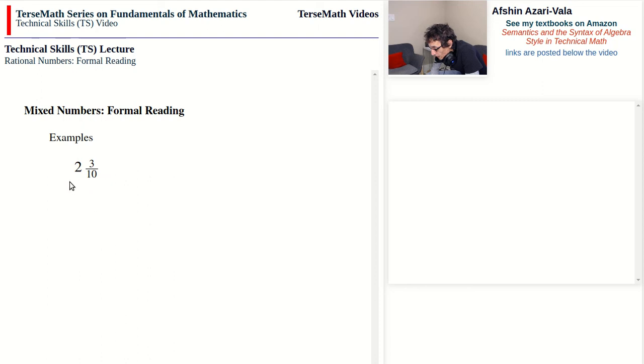You'll notice how the word 'and' separates the whole part, 2, from the fractional part, which is 3 tenths.